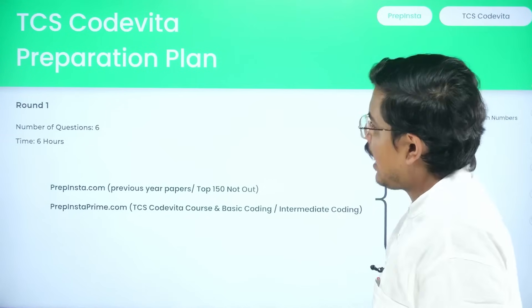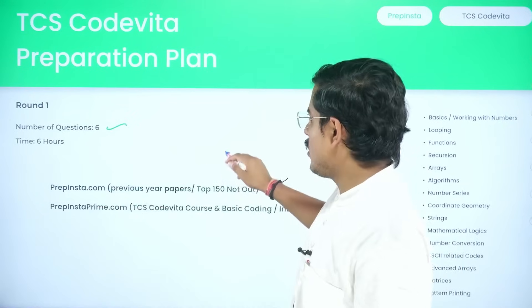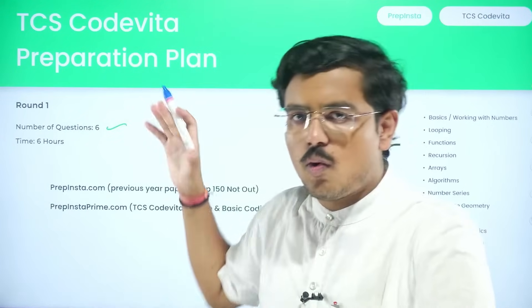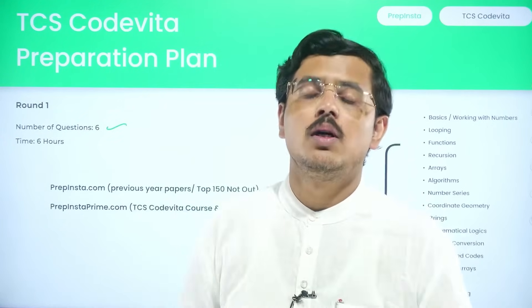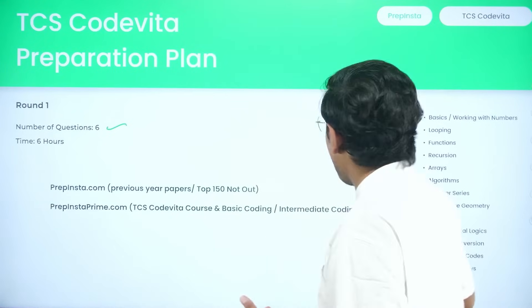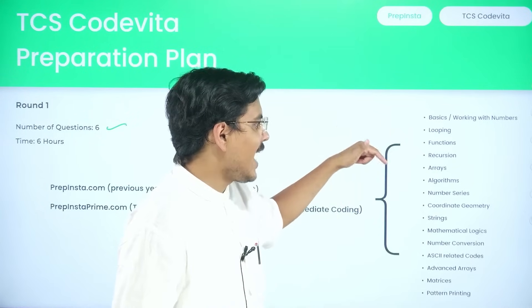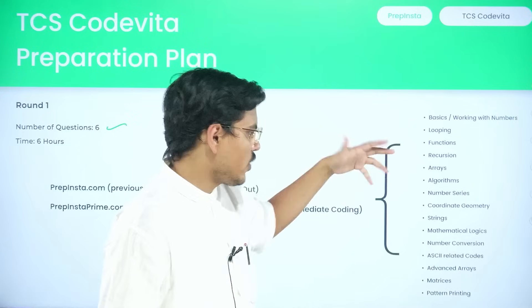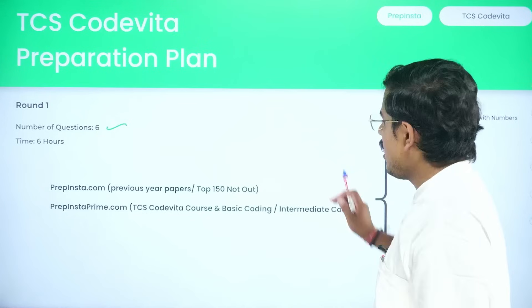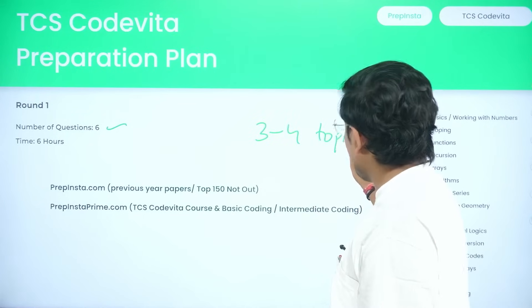For round one, six questions in six hours is definitely a tough round. This is a preliminary round, and a lot of people have never appeared in hackathons. I would suggest practicing sitting for longer periods building logic. The topics covered include basics, looping, functions, recursions, arrays, algorithms, number series, strings, mathematical logics, advanced arrays, matrices, and pattern matching — though only three to four of these topics would appear in any given round one.